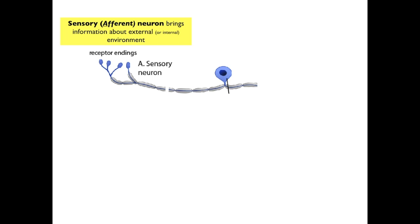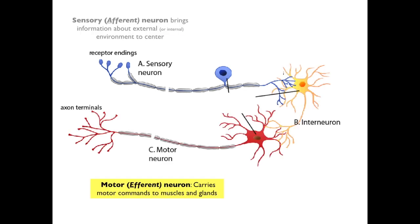Neurons that receive information or signals on their dendrites from receptors which respond to external or internal stimuli are the sensory neurons, sometimes referred to as afferent neurons, and sensory pathways are referred to as afferent pathways. A second type of neuron is the motor neuron, which receives information from other neurons and passes that signal directly onto peripheral effectors such as muscles or glands. From a motor neuron to effector is called the efferent pathway.